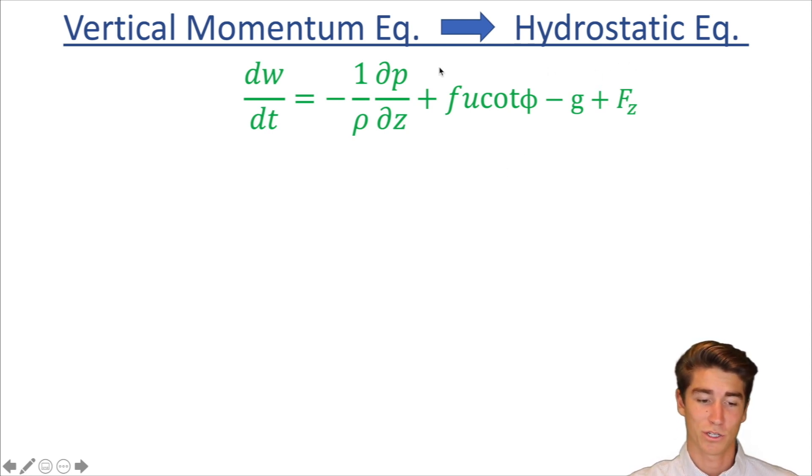So how you get the hydrostatic equation is actually from the vertical momentum equation. Now when you first see this it probably looks pretty confusing. So what we're going to do is we're going to break it down term by term and once you understand each individual term, then we're going to put them all together to understand the equation. We're going to eliminate some of them through scale analysis and then I'll even throw up some figures and animations to help you understand this seemingly complicated equation.